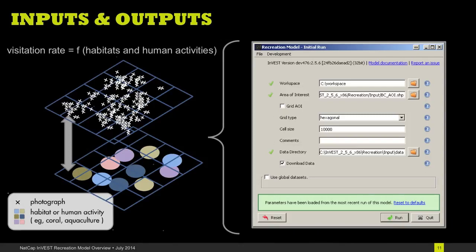There's also an option in the INVEST GUI here to include several global data sets that we've included with the distribution of the tool and those include data on locations of habitats as well as locations of infrastructure and other types of activities around the world.